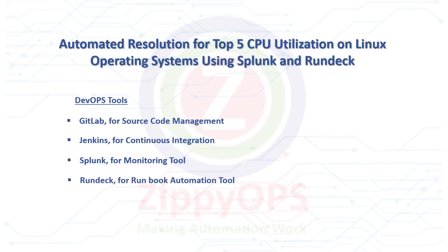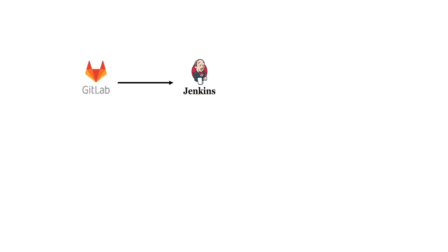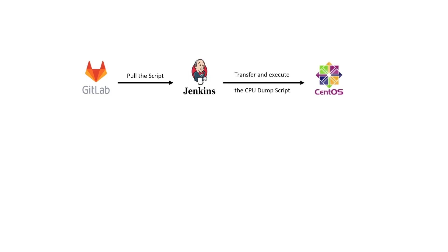Let's explore the workflow of automated resolution for top 5 CPU utilization on Linux operating system using Splunk and Rundeck, stage by stage. In the first stage, the Jenkins job will pull the script from GitLab. In the next stage, Jenkins will transfer and execute the script to the Linux node, which has the instruction to increase the CPU usage on the machine.